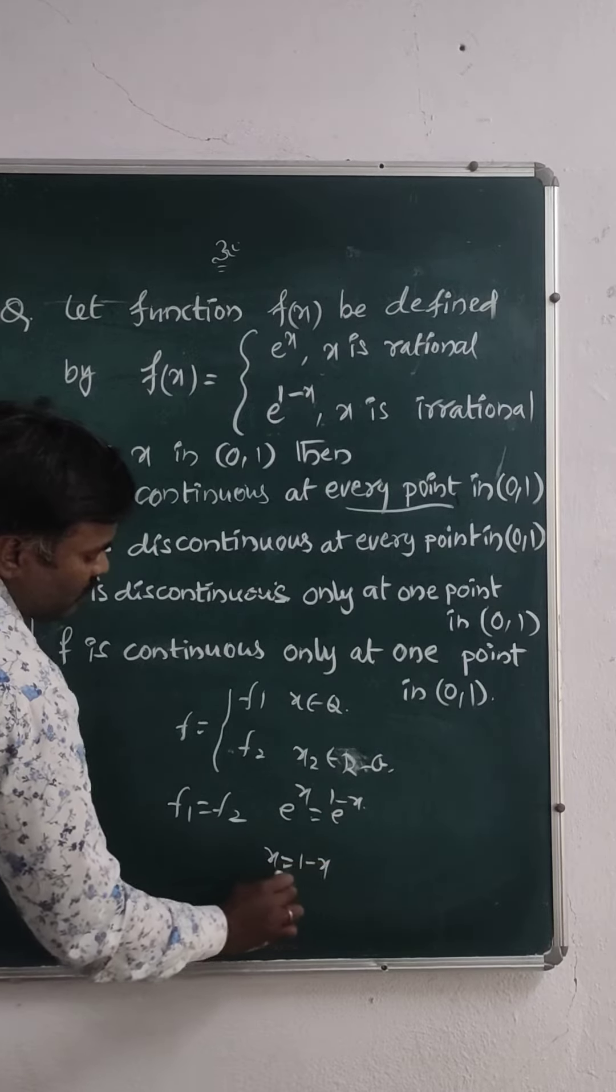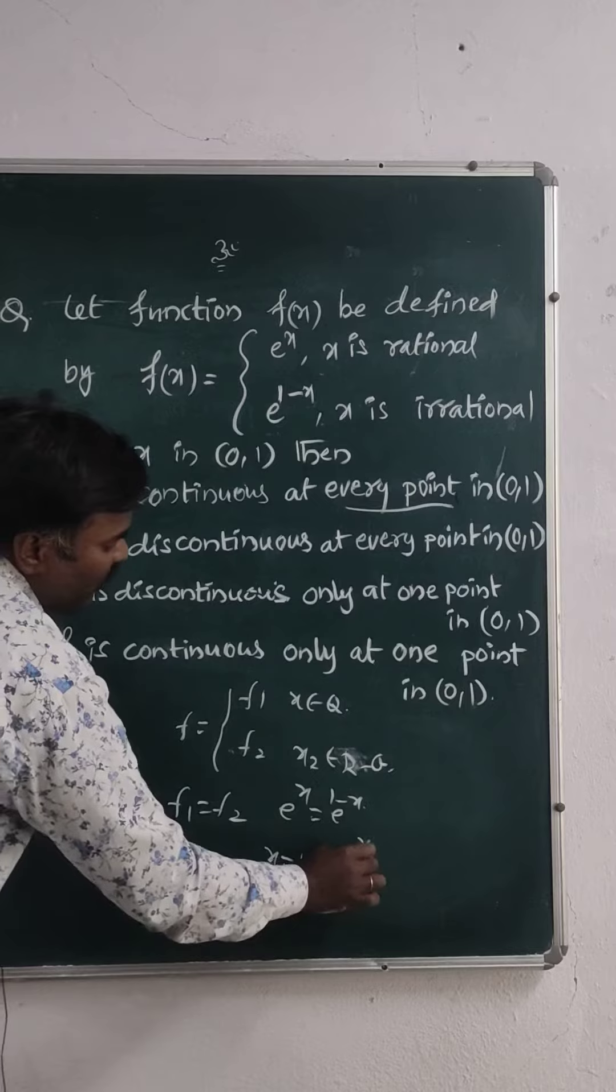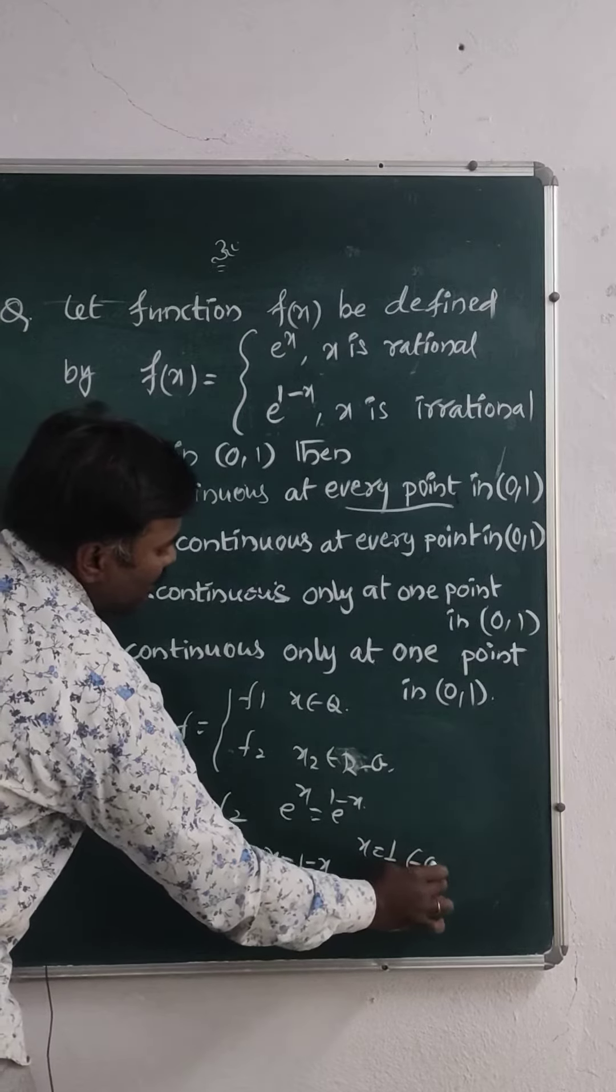So, x equals 1 minus x. So, 2x equals 1. Therefore, x equals 1/2 which belongs to (0,1).